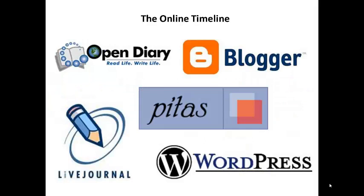Up until then, people created blogs from scratch. But blogging platforms started to emerge, making the act of creating and publishing an online journal extremely easy and inexpensive. In 1998, Open Diary launched, offering online writers free hosting and an easy publishing solution. In 1999, a number of blogging platforms launched, including LiveJournal, PITAS, and Blogger — which would eventually be purchased by Google. In 2003, WordPress launched.